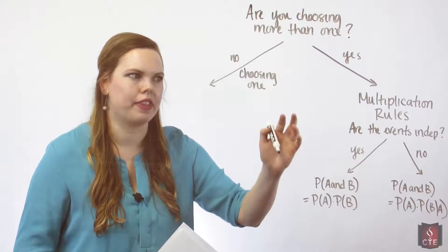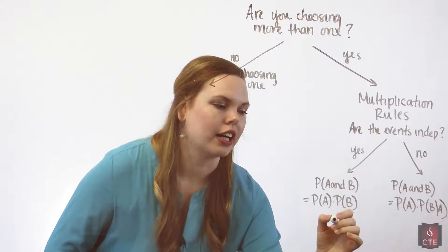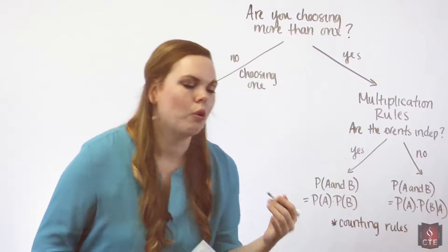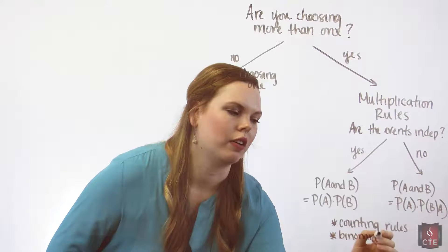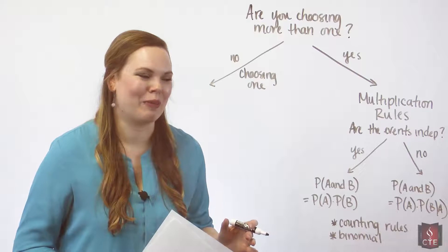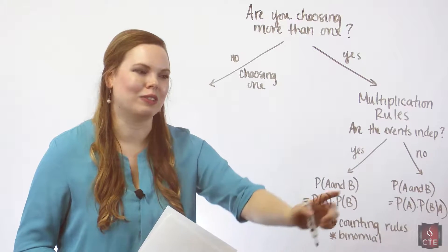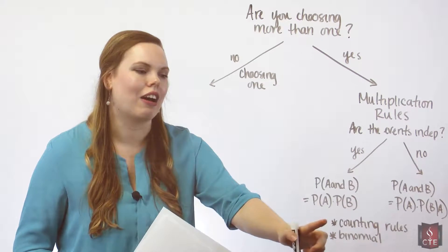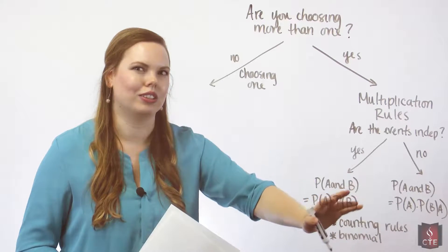Keep in mind that for problems using the multiplication rule, sometimes we can simplify by using counting rules or the binomial. We may not have talked about the binomial yet in class, but we will. It makes independent-event multiplication rules a little easier, and counting rules can also simplify some of these problems.